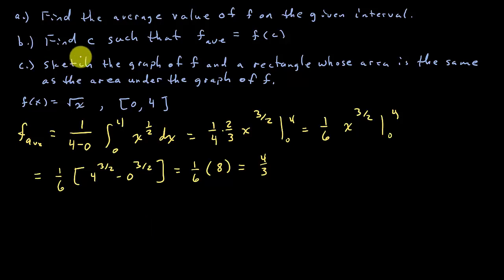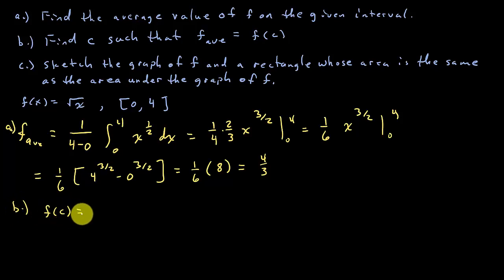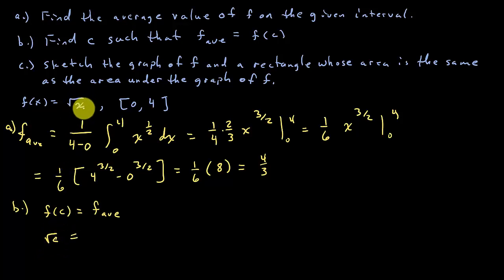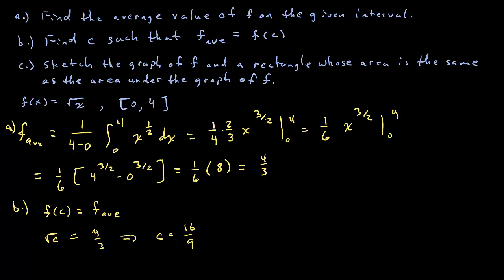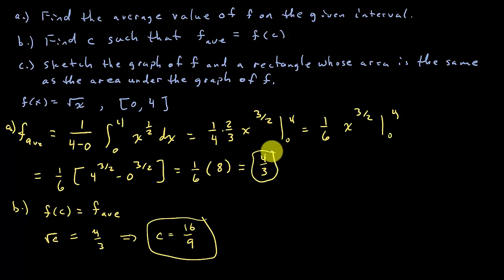For part b, find c such that the average value equals f of c. So f of c equals the square root of c, and that equals 4 thirds. Squaring both sides, this tells me that c equals 16 over 9. That's the c value for part b, and 4 thirds is the answer for part a.